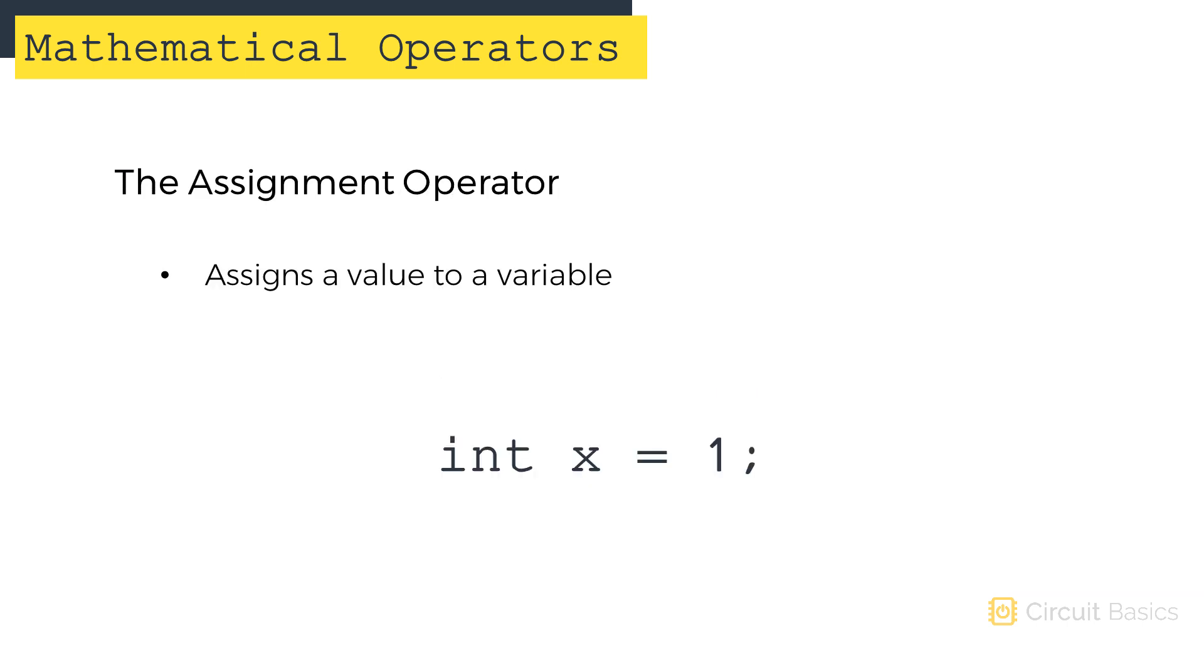When we write a math expression or declare a variable, we use what's called an assignment operator. The assignment operator is the equal sign. The assignment operator is used to assign a value to a variable. For example, when we declare an integer variable called x and set it equal to 1, this tells the program to store the integer 1 in the variable x.